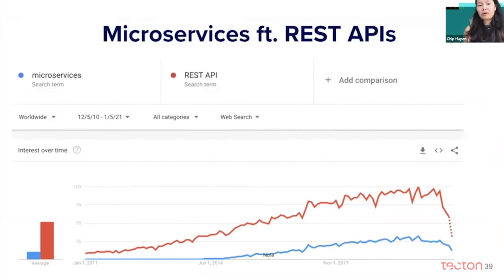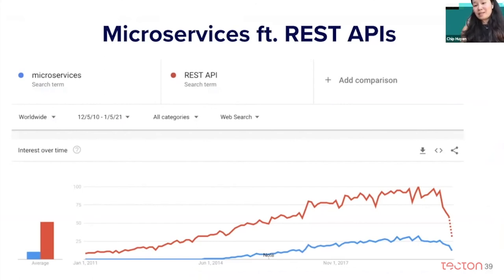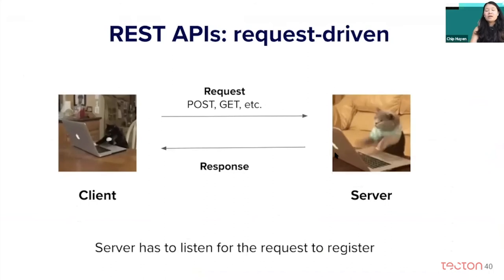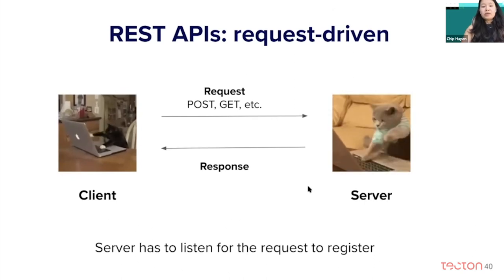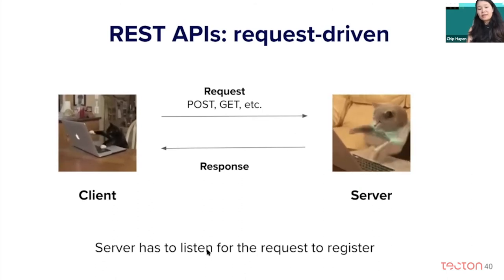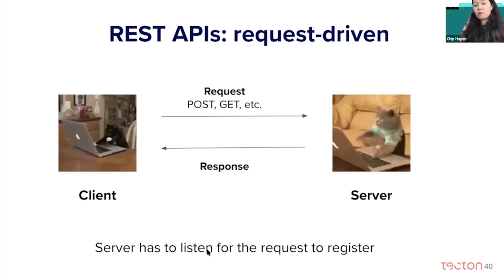If you try to talk about stream processing, you also have to talk about microservices. You must have heard about microservices — it's been one of the biggest trends of the last decade — and going hand in hand with microservices is usually REST API. With REST API, the model is request-driven: you have a client and a server, the client sends a request via POST or GET to the server, and the server returns a response. The server has to listen for requests, so if for some reason the server is down, the client has to keep pinging the server until it gets a response back, or it can timeout.